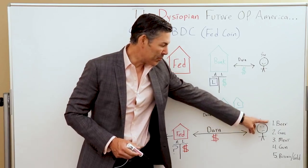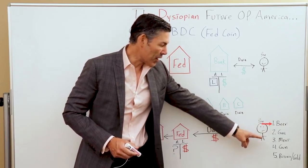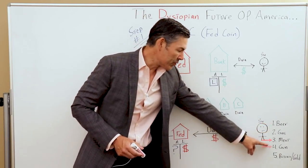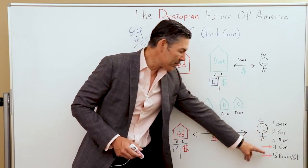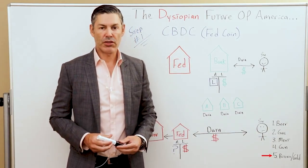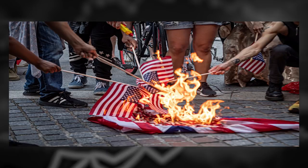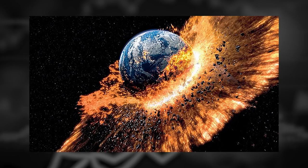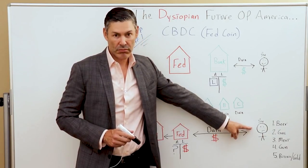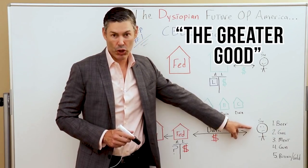Anyone who drinks beer, drives a gas-powered car, eats meat, owns a gun, buys Bitcoin and gold — in their view — really wants to destroy America, wants to destroy the human race. And therefore, if we got rid of this person or isolated them, it would, of course, be for the greater good.